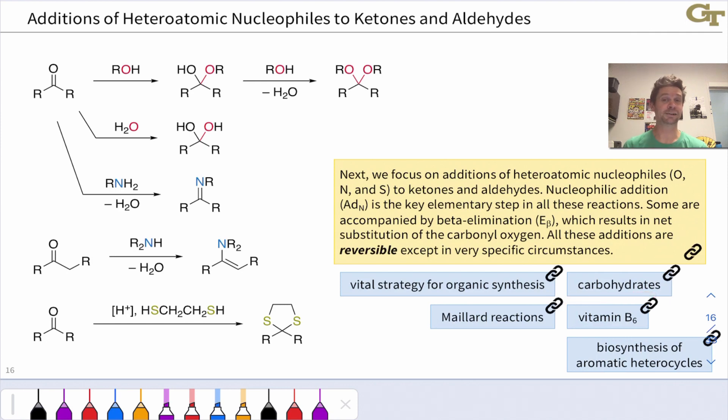Carbohydrates are a famous and very important example of acetals and hemiacetals. Maillard reactions can involve condensations of amino groups and amino acids with carbonyl groups in carbohydrates in the cooking of food. Biosynthesis of aromatic heterocycles—where does the heterocycle in NADH come from? These kinds of condensation reactions involving reactions of heteroatomic nucleophiles with ketones and aldehydes are a vital part of those biosynthetic processes.